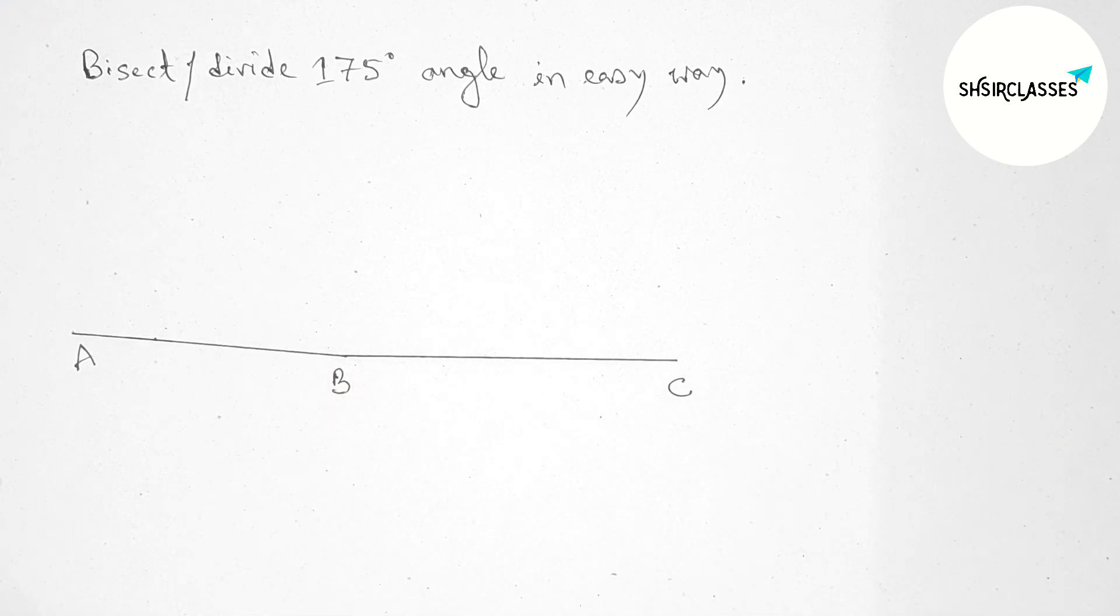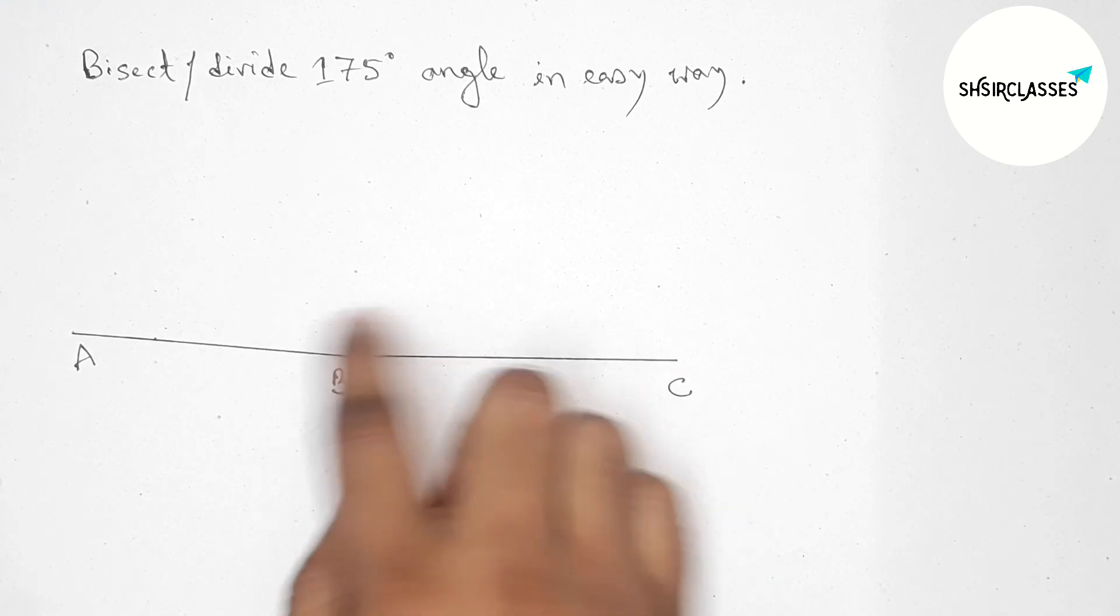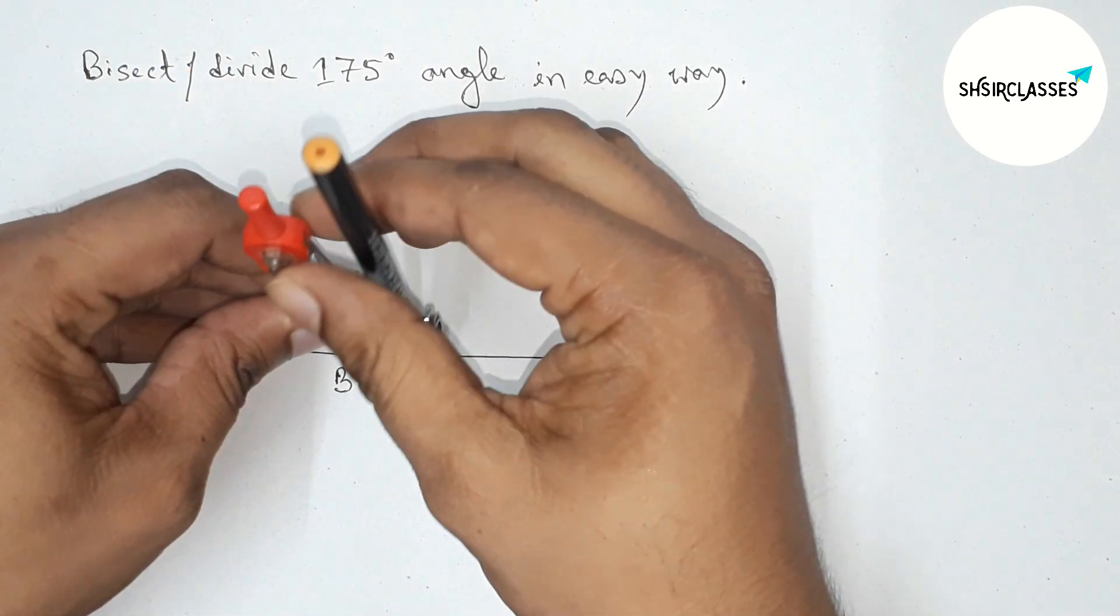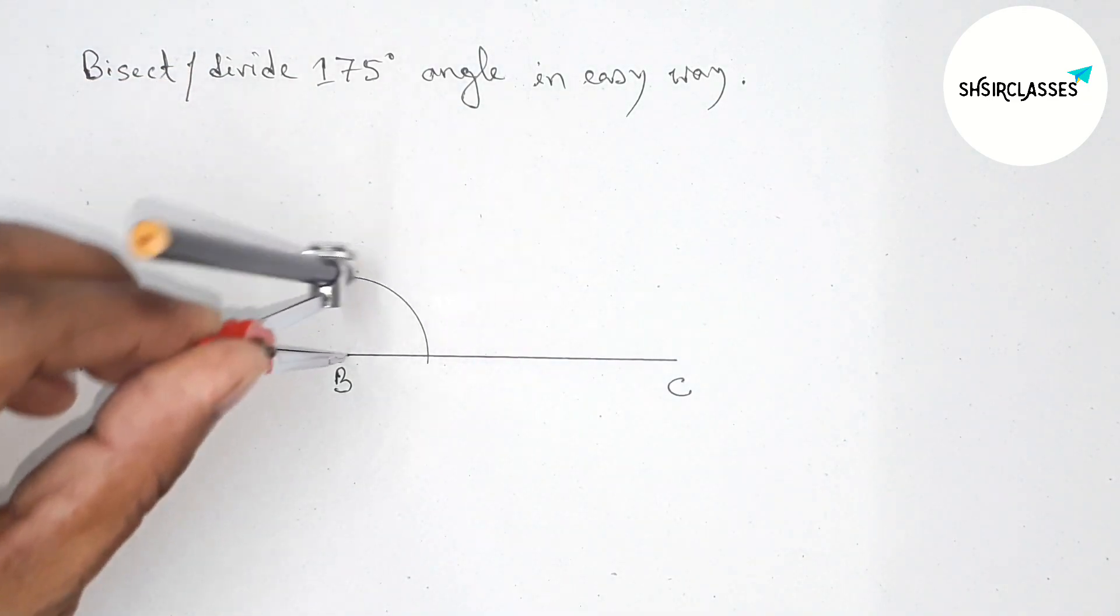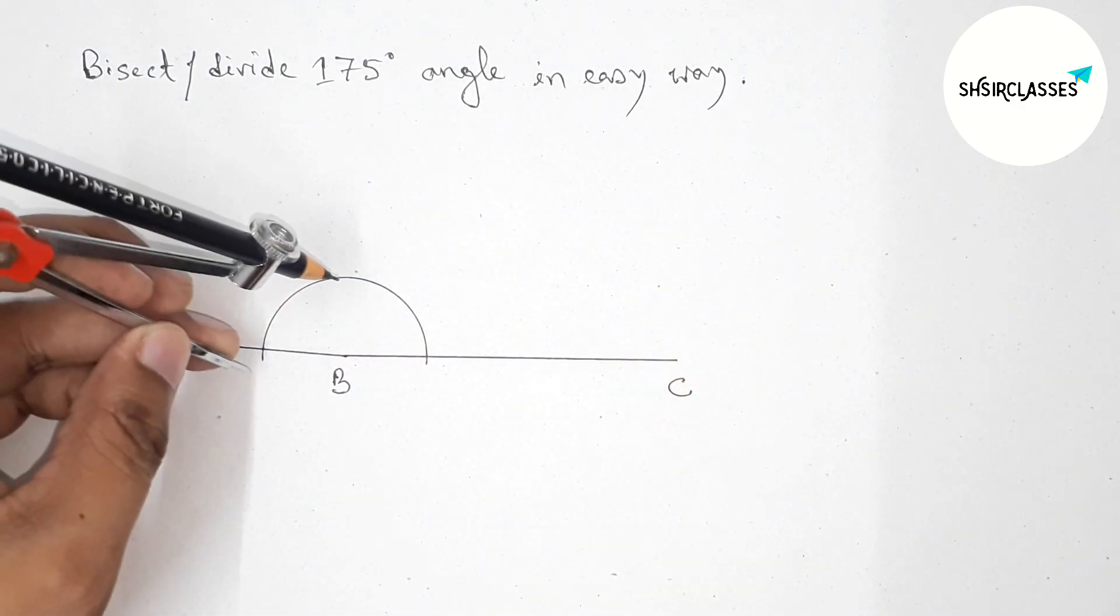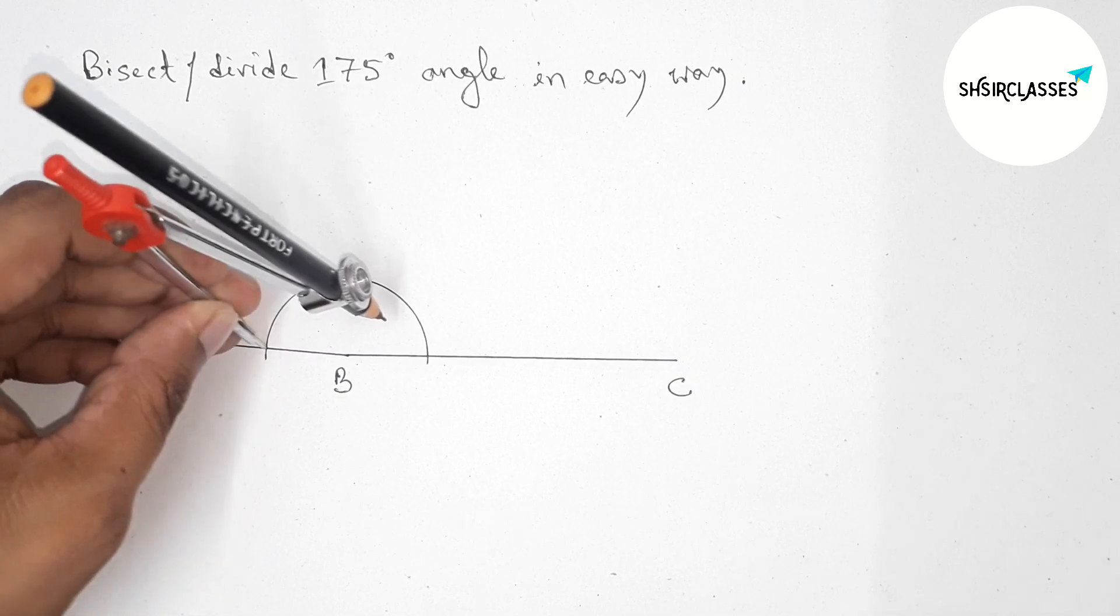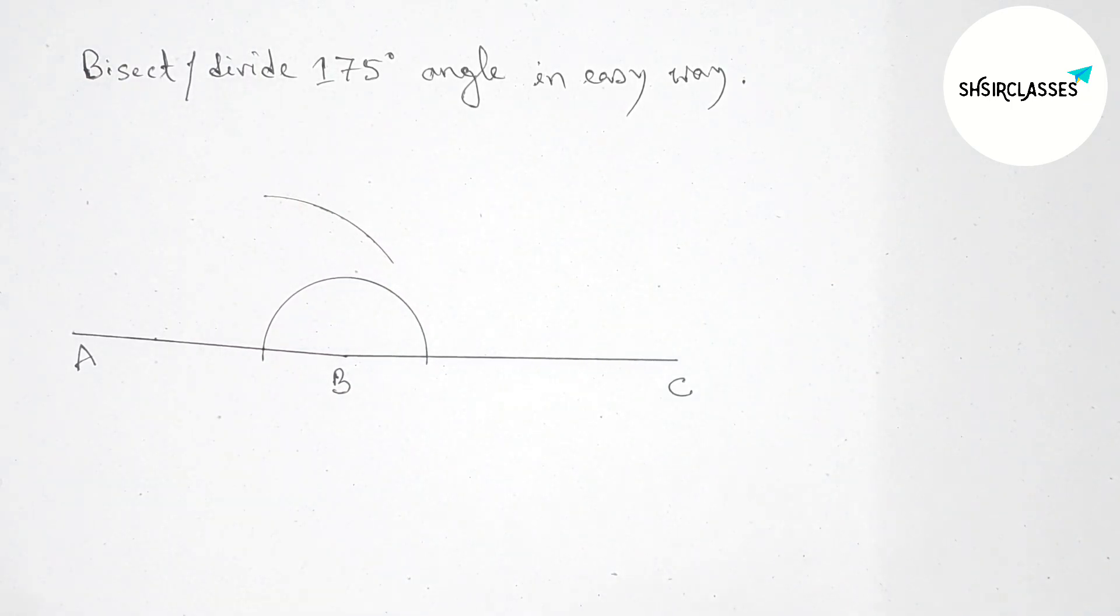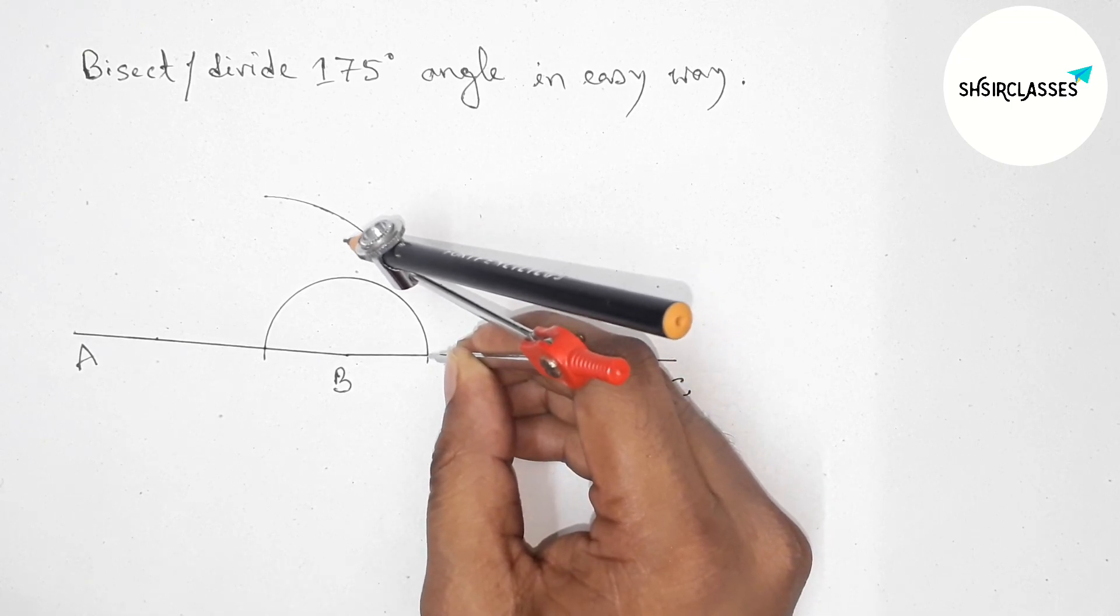Next, bisecting this angle with the help of compass. Putting the compass on the point B and taking any length, so first drawing here an arc by this way. Now putting the compass here and taking greater than half of this and drawing an arc by this way. And putting the compass here and cut here.